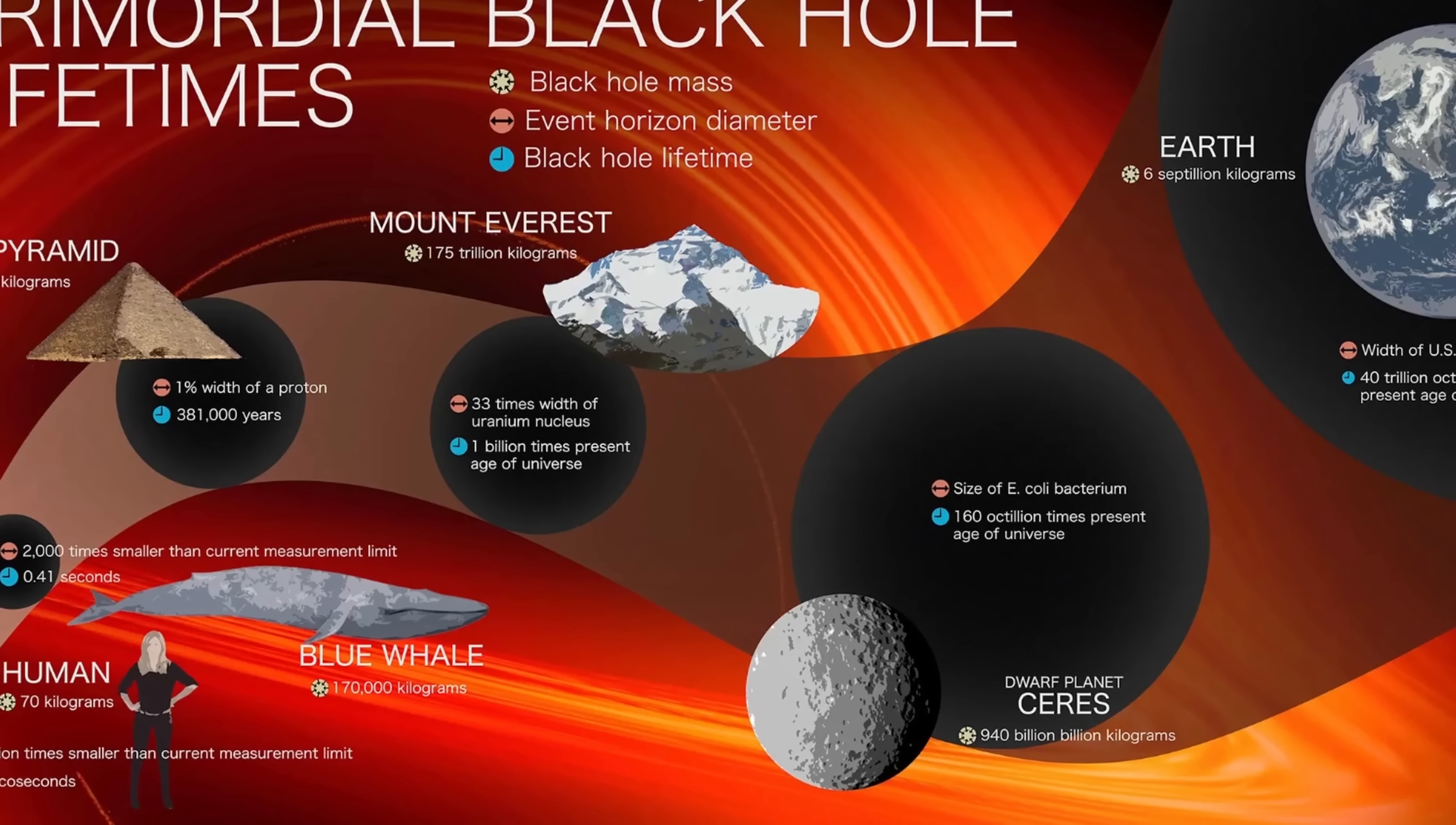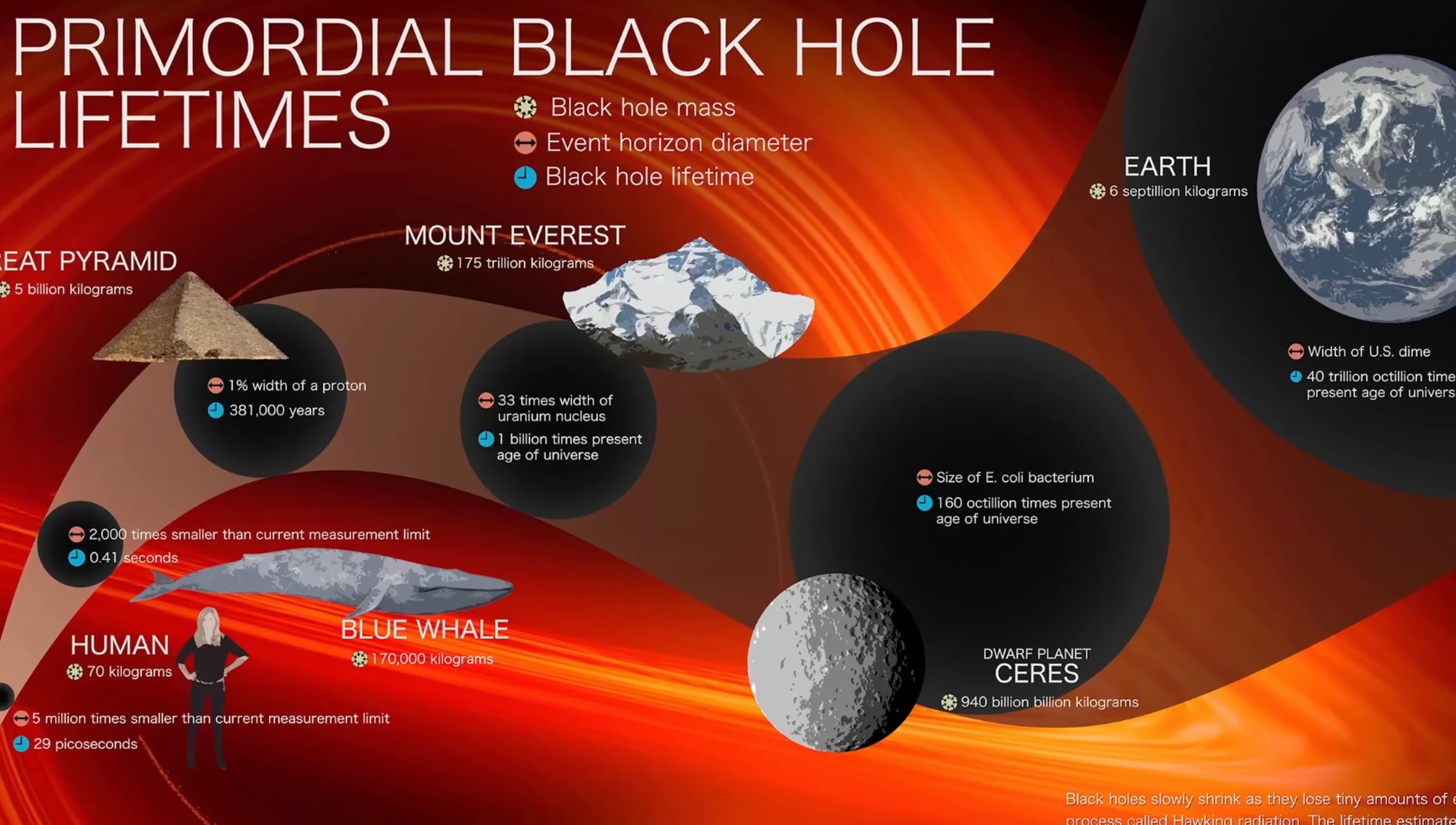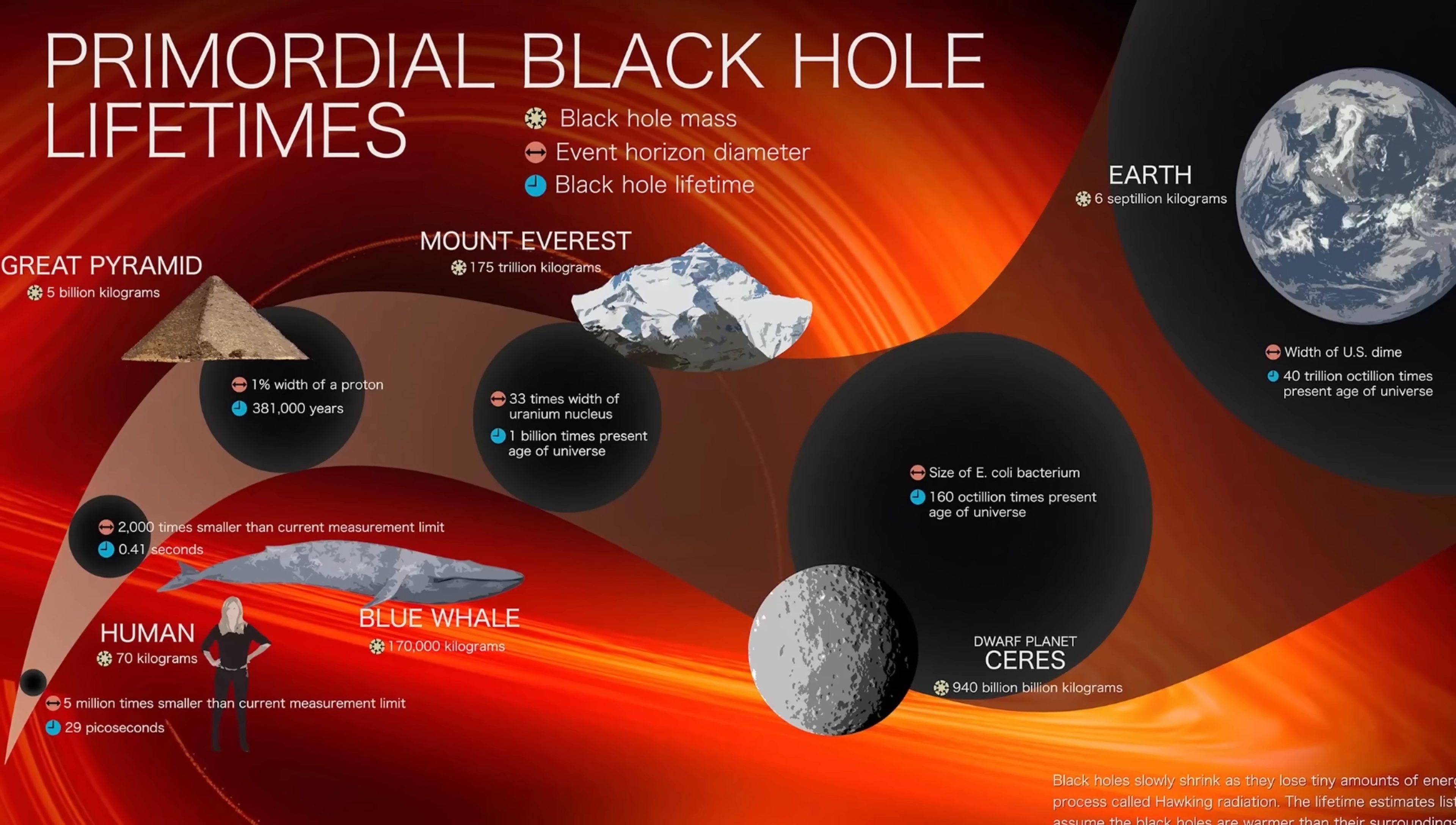And once it gets small enough, it will actually start evaporating faster and faster, with a black hole that's small enough producing so much radiation that it eventually explodes. Back in the days, NASA actually made this primordial black hole lifetime illustration roughly showing us how long a typical black hole would last depending on its mass.